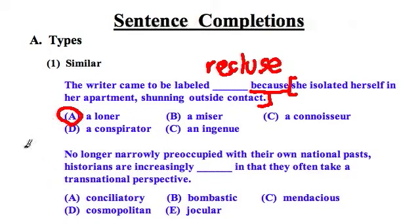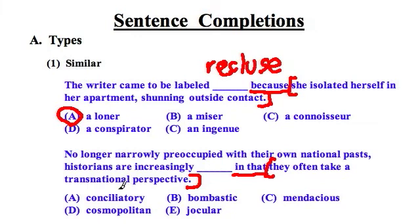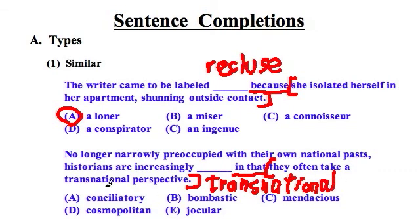Second sentence: 'No longer narrowly preoccupied with their own national past, historians are increasingly blank in that they often take a transnational perspective.' The phrase 'in that' suggests similarity between the parts. The part without the blank gives you a clue — they are transnational — so you can borrow from other parts of the sentence if you can't come up with your own word. You're looking for a word that means transnational, which is 'cosmopolitan.'